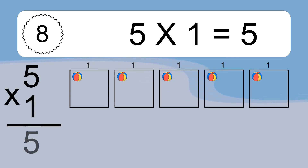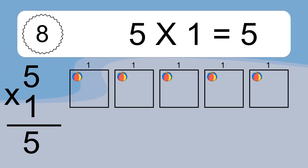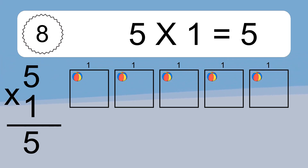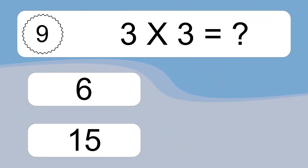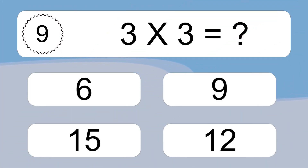5 times 1 equals what? 5 times 1 equals 5. We have 5 boxes and each box has 1 colorful ball inside. If you count all the balls in all the boxes together, you will have 5 times 1 balls. This equals 5 balls.